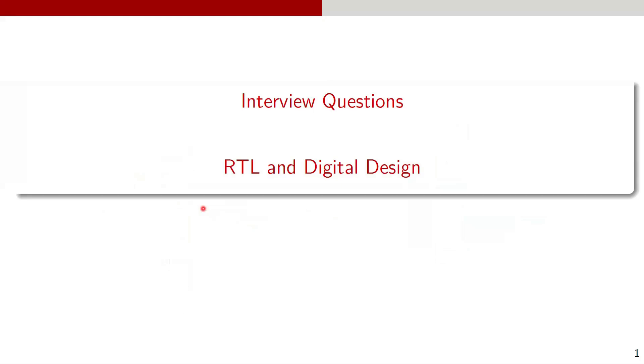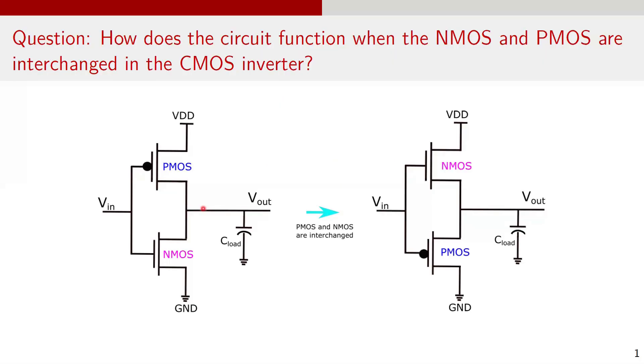Hello everyone. In this video, let's discuss an important question that is commonly asked in digital design interviews. What happens if the PMOS and the NMOS transistors are interchanged in the CMOS inverter? How would the modified circuit behave and what would be its output?